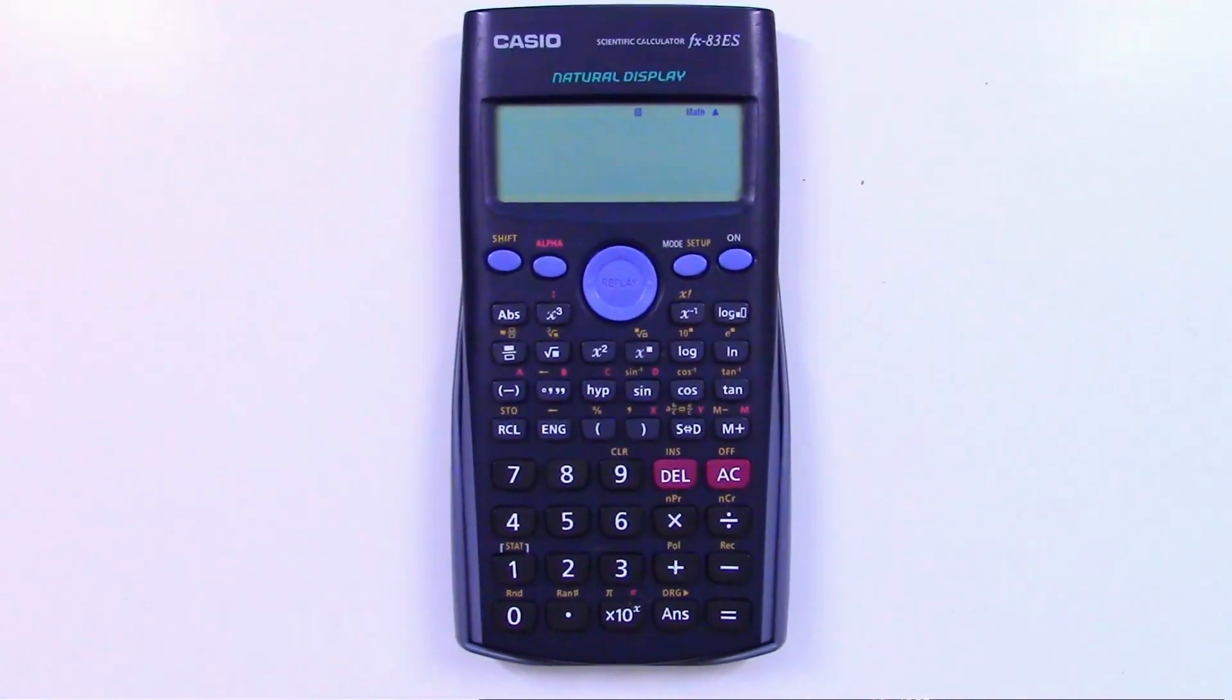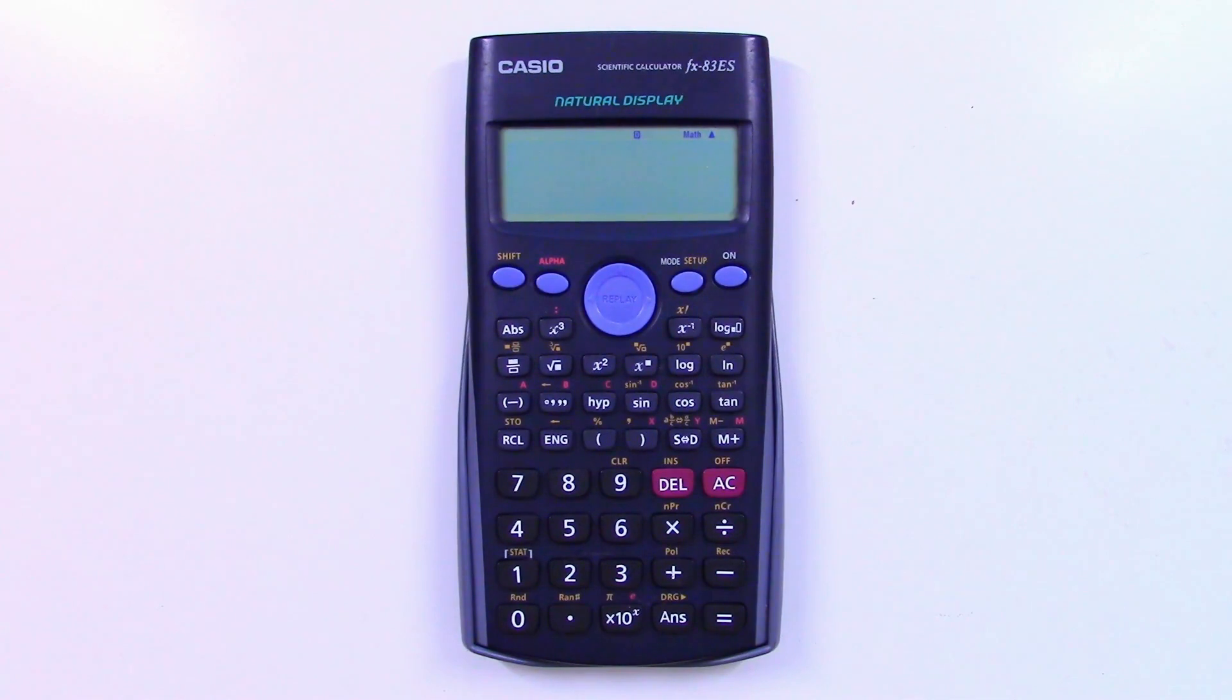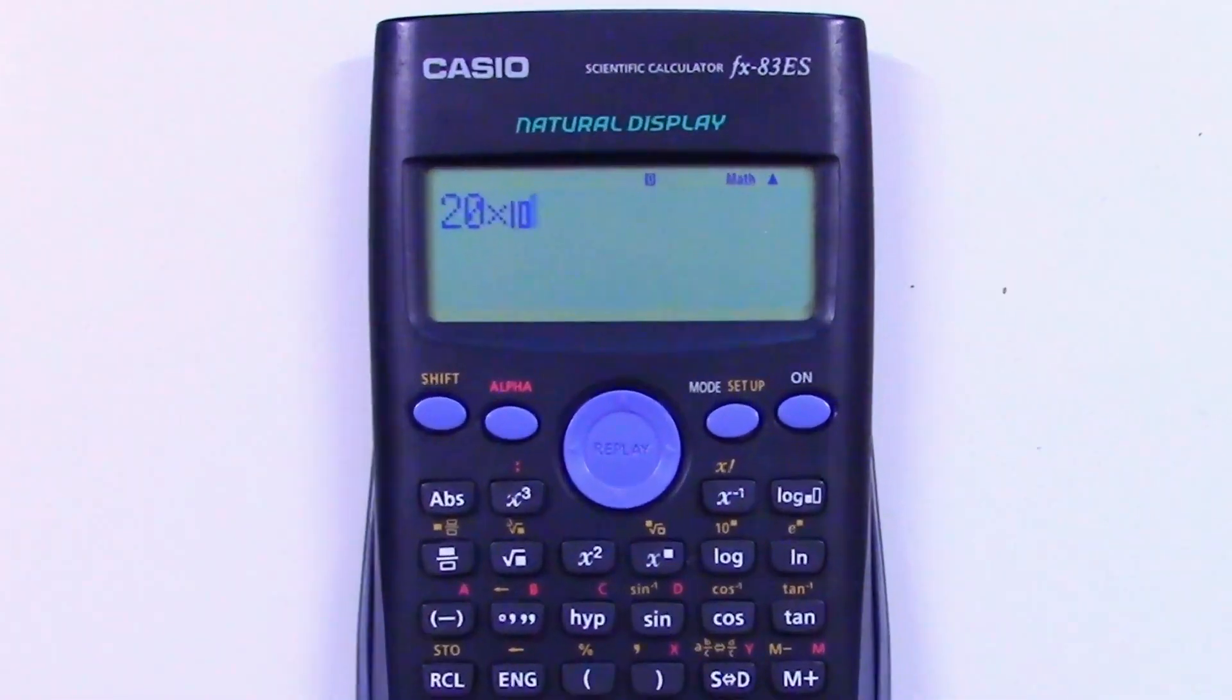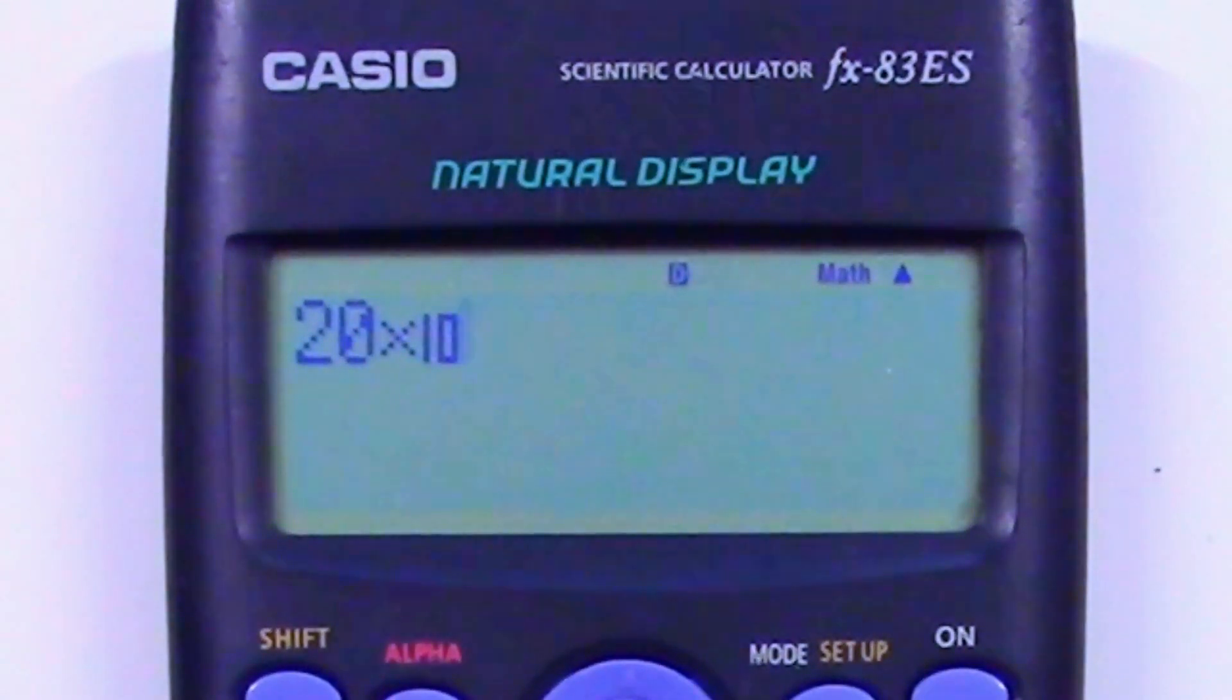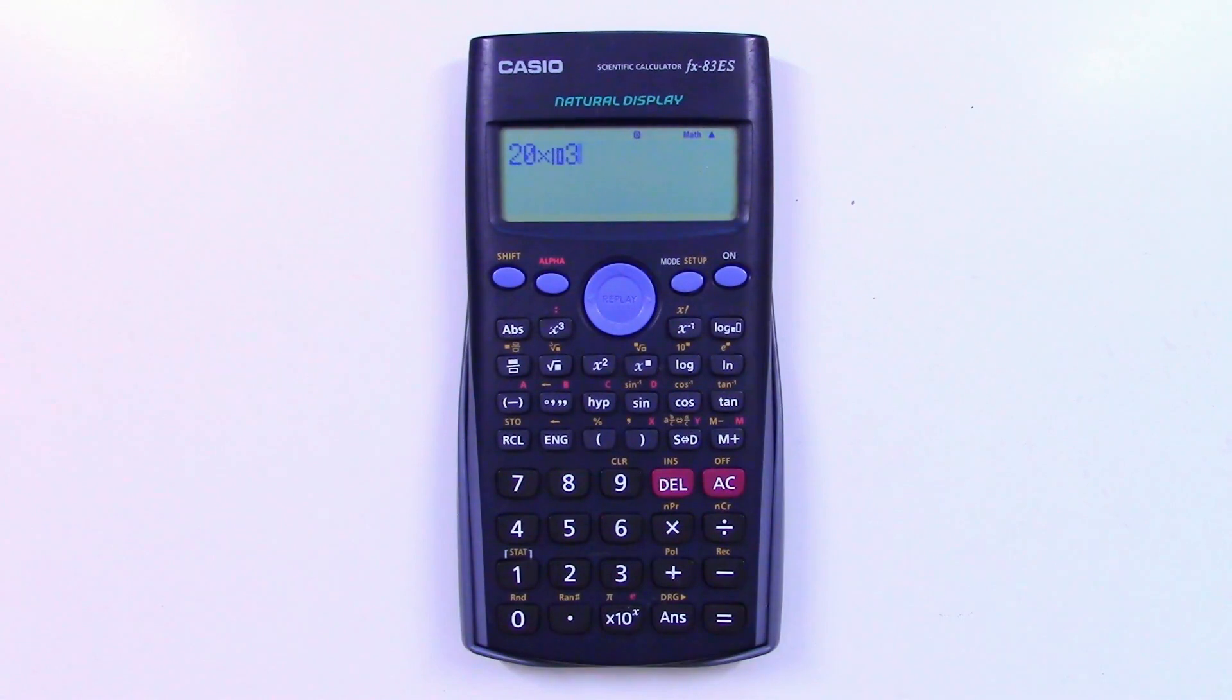If I wanted to type 20 kilometres in standard form, that's 20 times 10 to the 3, remember? I'd just type 20, hit this button, which you can see gives us our times 10 to a power, and then enter my power, in this case 3. That's it. Again, enter your number, hit this button, then enter the power. It's that simple.